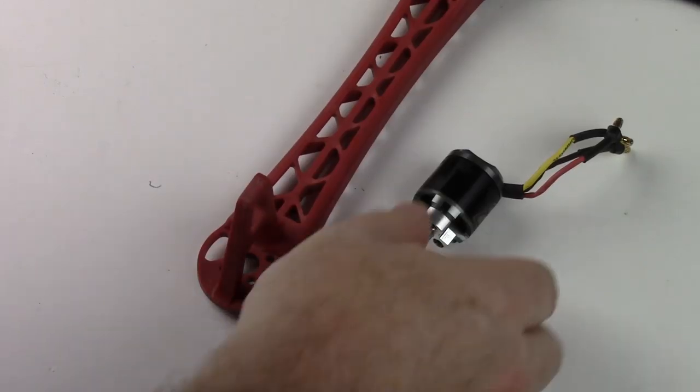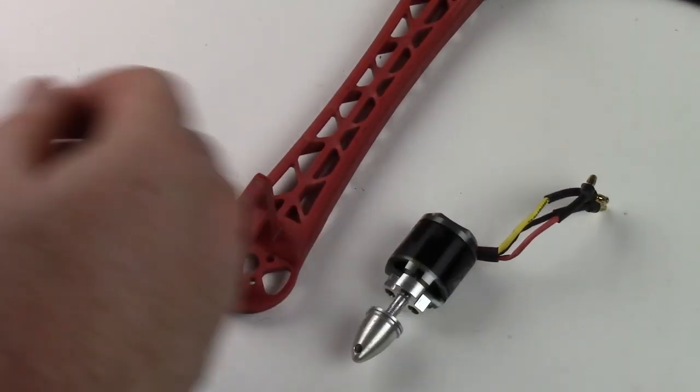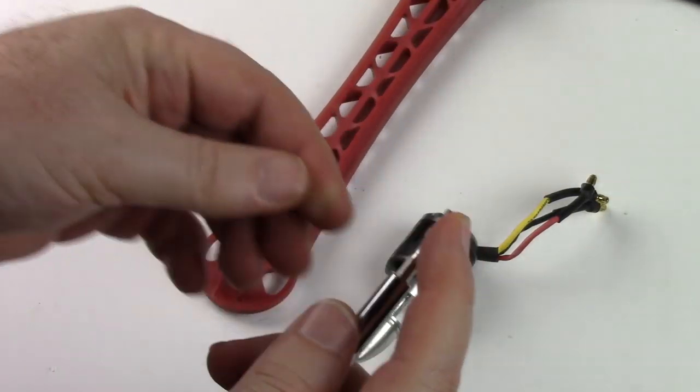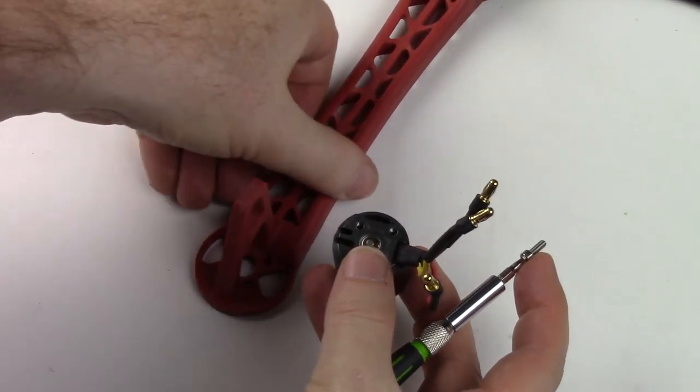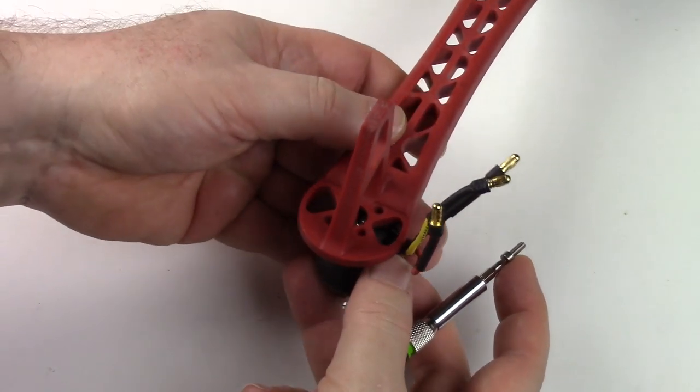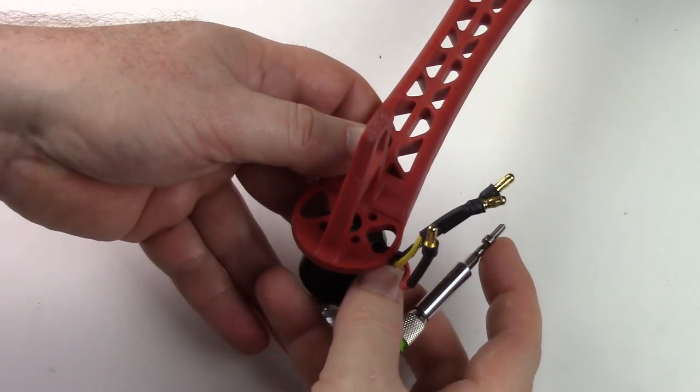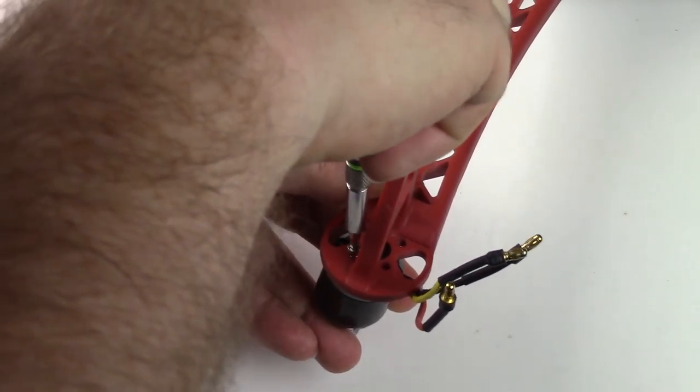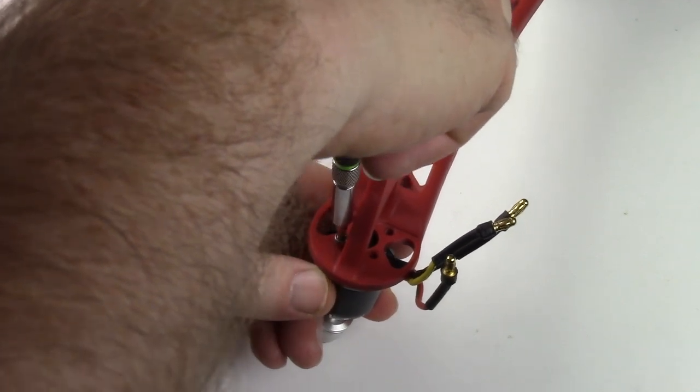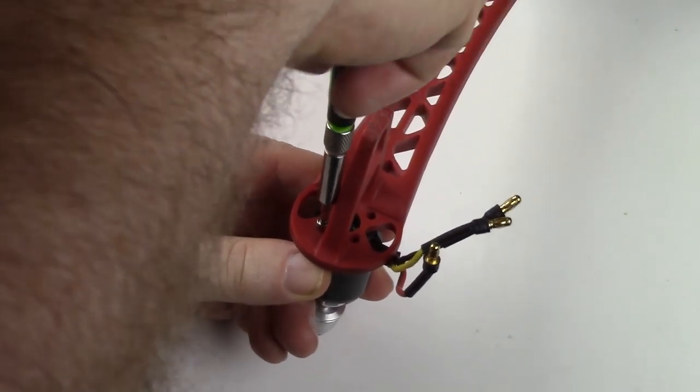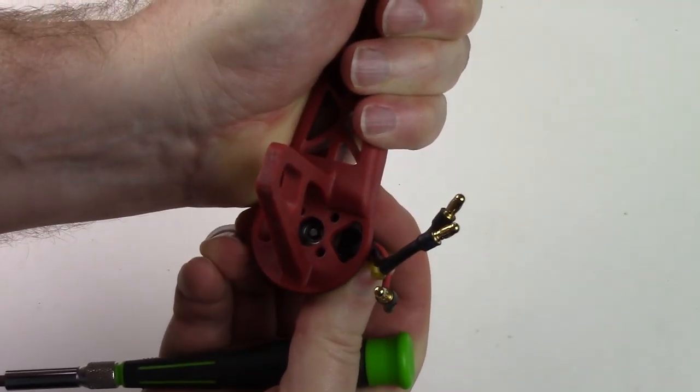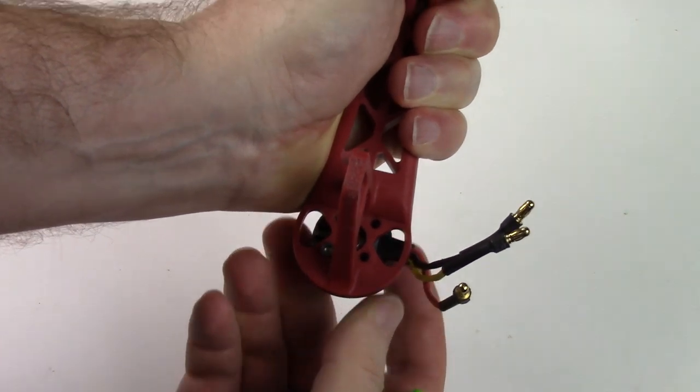So to install the motors I flip the frame over and install the first screw. Make sure you line the motor up, the motor bolt holes are keyed. And once you get the first one lined up, then it can kind of hold the motor in place while you line up the rest of them.